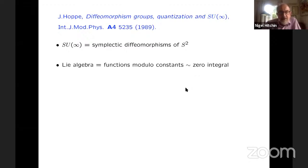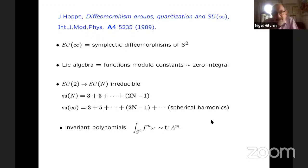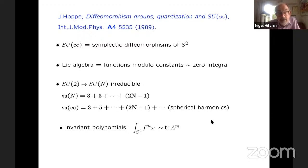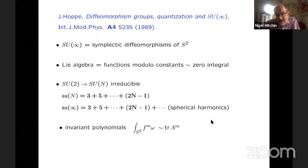Why? Well, there are a number of reasons. The Lie algebra of the symplectic diffeomorphisms is the space of Hamiltonian functions modulo the constants. And because the two-sphere is compact, we can actually normalize those to make them zero integral. So if you take the N-dimensional irreducible representation of SU and decompose the Lie algebra of SU(N) under the action of SU(2), then what you get is the three-dimensional plus the five-dimensional, broken up into irreducibles: three plus five all the way up to 2N minus one.